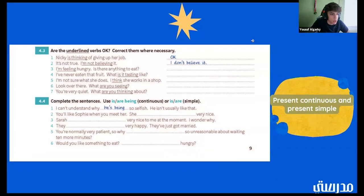All right. And then, the last bit. Here, we want to say if it's okay or if we need to fix it. So, number three. I'm feeling hungry. Is there anything to eat? Is that one okay? That one's okay. Good. Number four. I've never eaten that fruit. What is it tasting like? Is that one okay? What does it taste like? Good. So, it's not okay. Number five. I'm not sure what she does. I think she works in a shop. Is that one okay? Yeah. It is good. Number six. Look over there. What are you seeing? What do you see? Good. And then, number seven. You're very quiet. What are you thinking about? That one's okay. All right. Good.